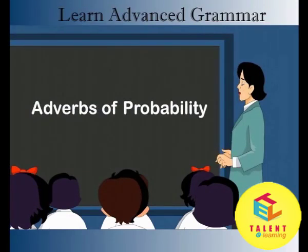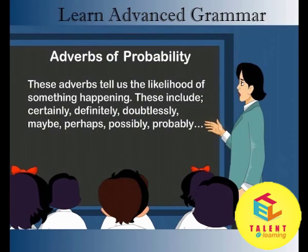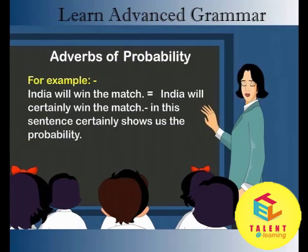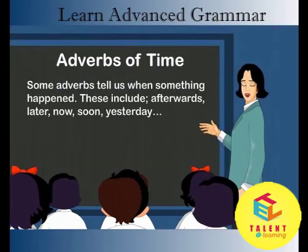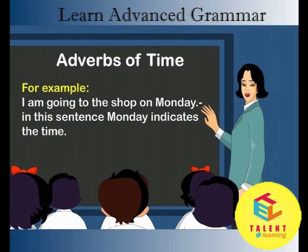Adverbs of probability. These adverbs tell us the likelihood of something happening. These include certainly, definitely, doubtlessly, maybe, perhaps, possibly, probably. For example: India will win the match / India will certainly win the match. In this sentence, certainly shows us the probability. Adverbs of time. Some adverbs tell us when something happened. These include afterwards, later, now, soon, yesterday. For example: I am going to the shop on Monday — Monday indicates the time.